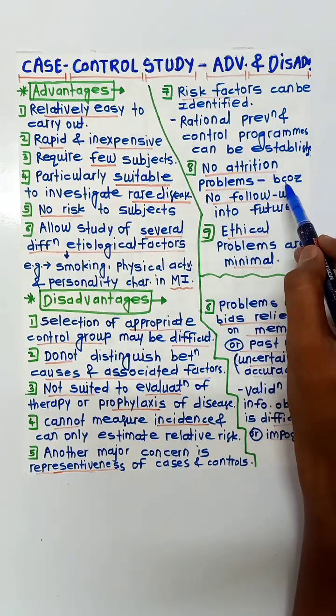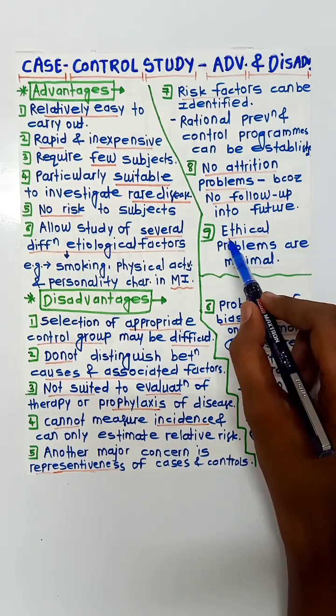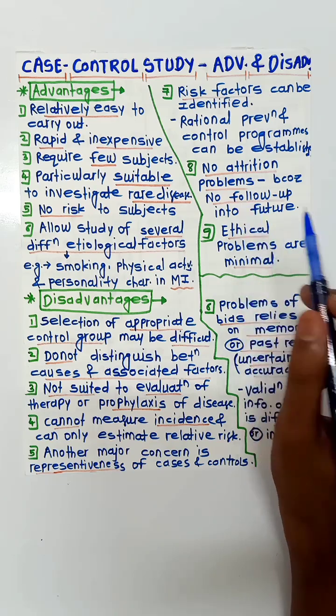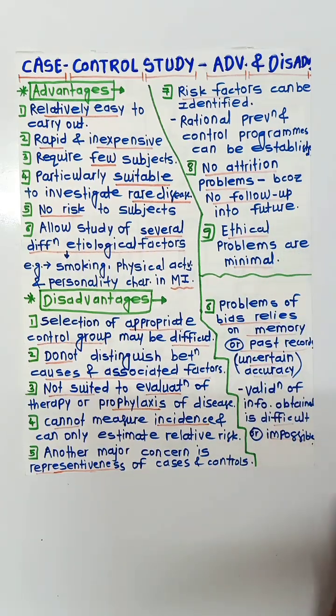No attrition problems because no follow-up into the future is needed for individuals, and ethical problems are minimal in this case. These are the advantages of the case control study. In the next video, we are going to see the disadvantages.